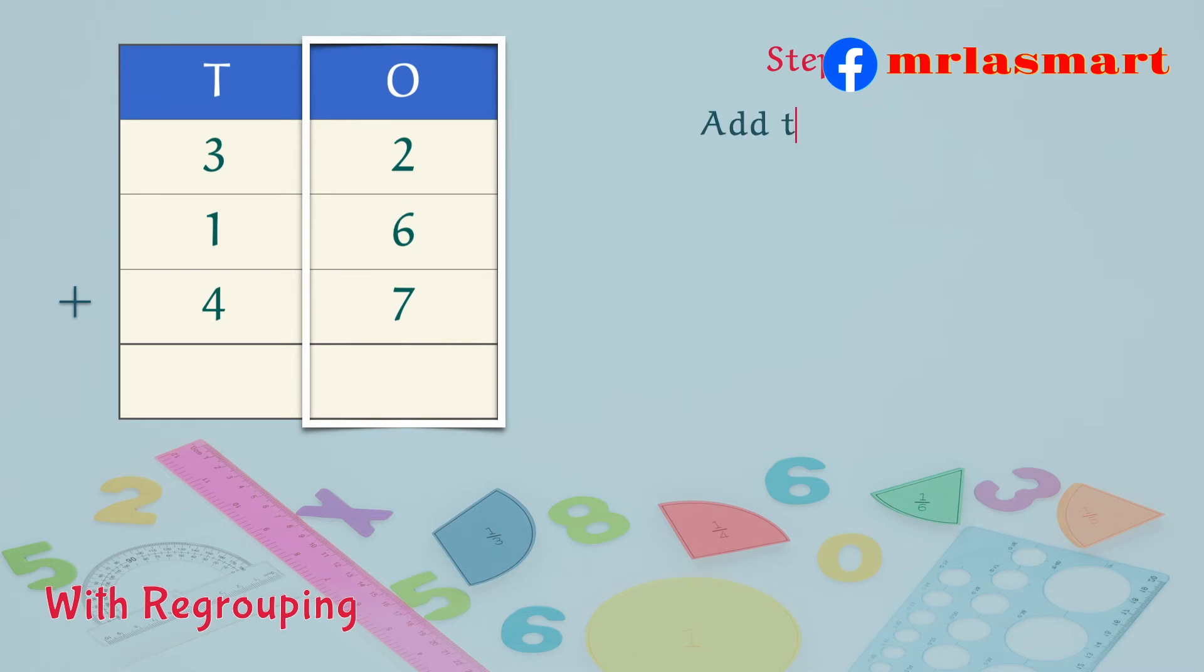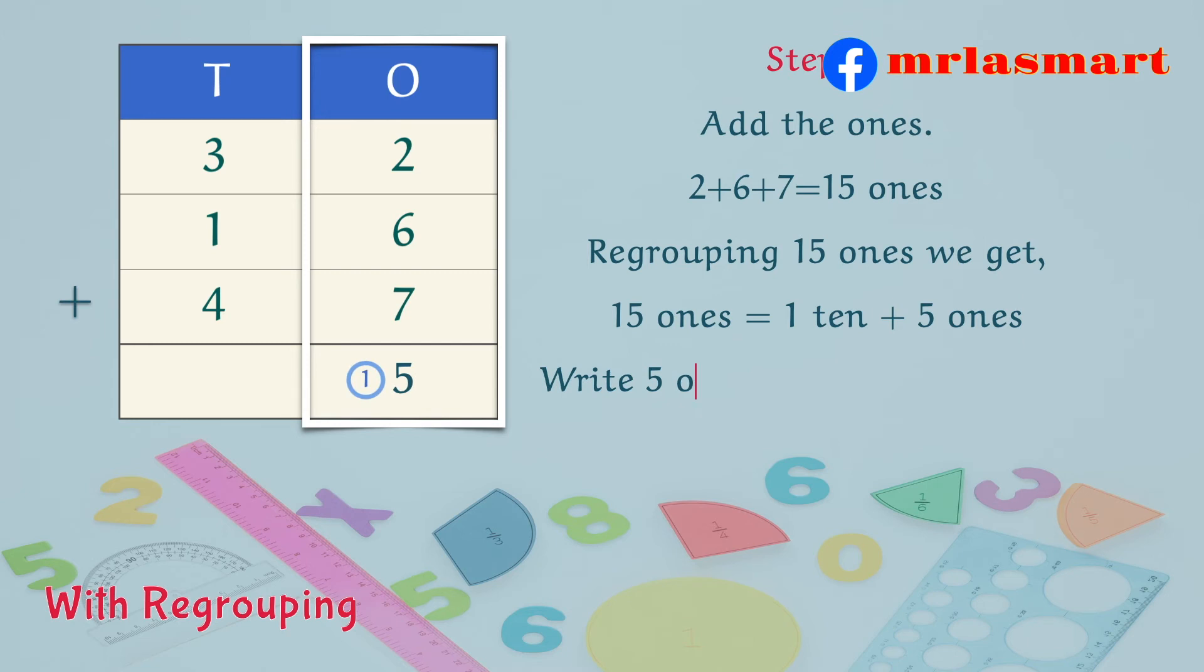Step 1: Add the ones. 2 plus 6 plus 7 equals 15 ones. Regrouping 15 ones we get, 15 ones equals 1 ten plus 5 ones. Write 5 ones in the ones column and carry 1 ten to the tens column.